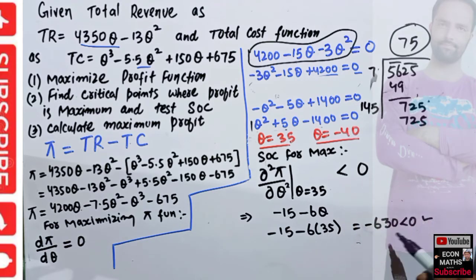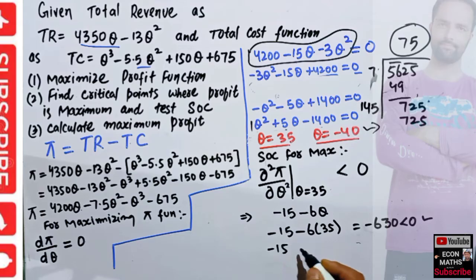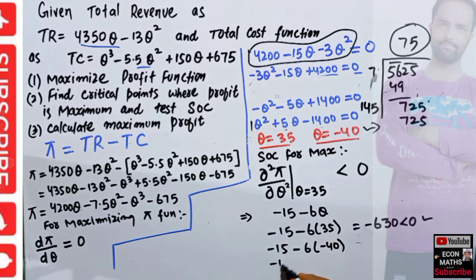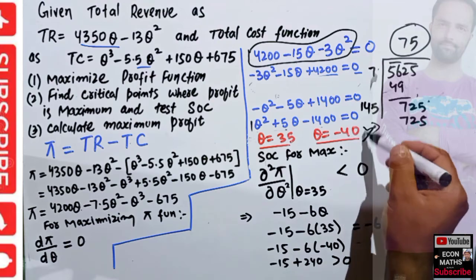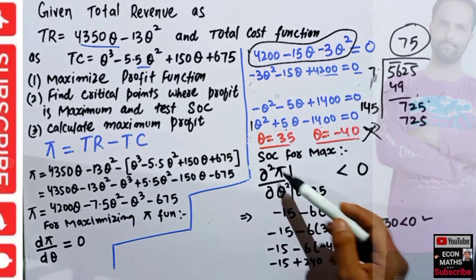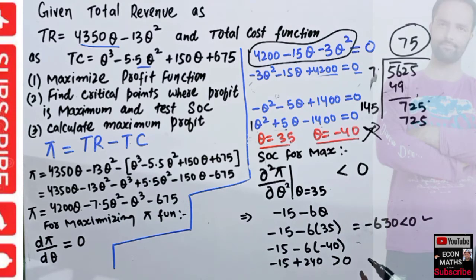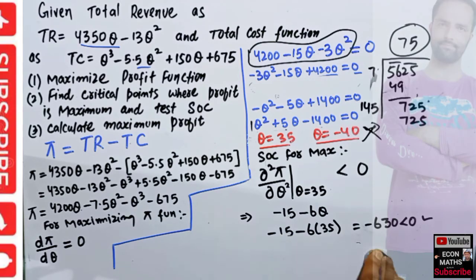The second order condition for maximum is satisfied at Q = 35. If we evaluate at Q = −40: d²π/dQ² = −15 − 6(−40) = −15 + 240 = 225, which is positive — so Q = −40 does not satisfy the SOC for maximum, confirming it cannot be our answer.